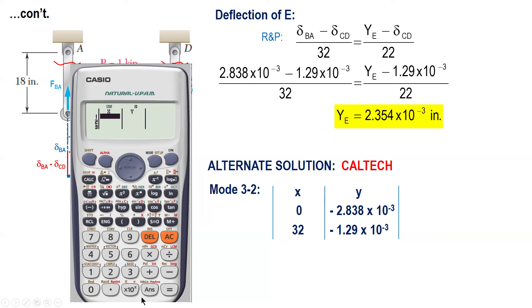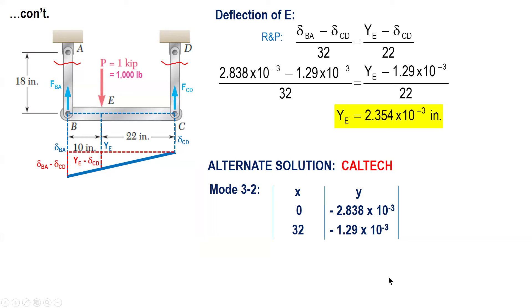So after you input like 0 equals 32 equals and then Y values, press AC to clear the screen.